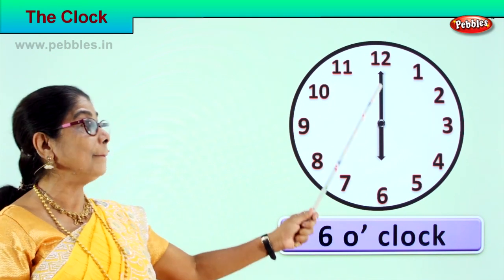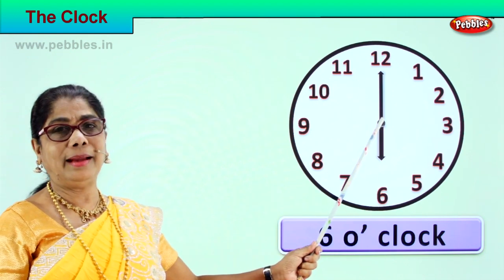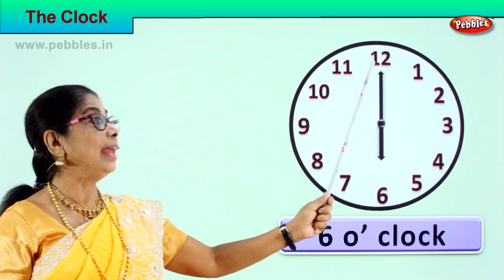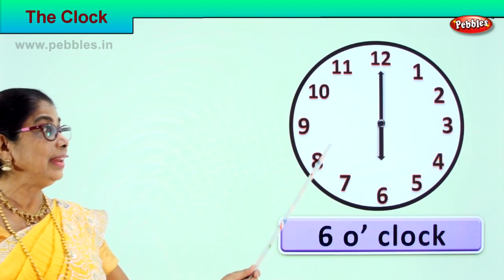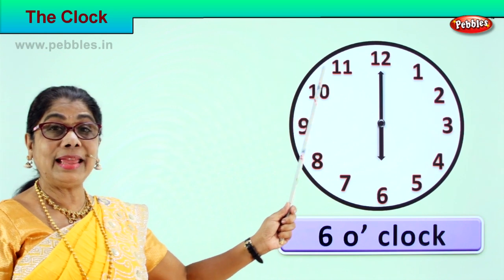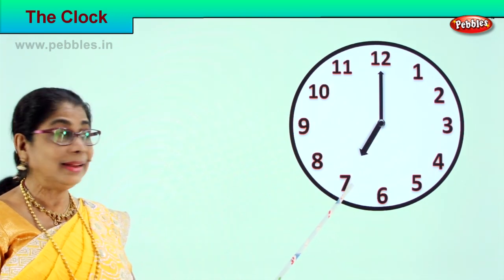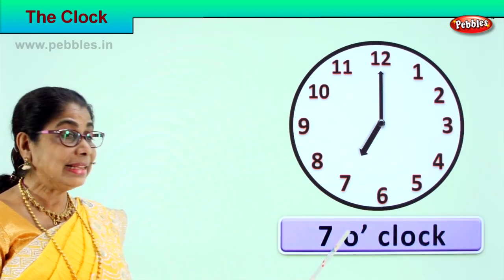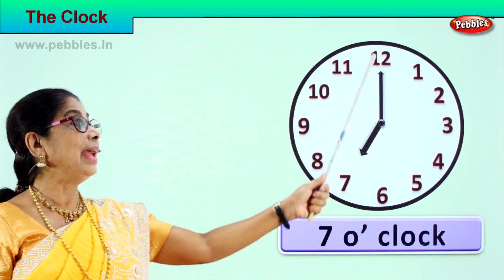We are learning to read the time. Now the minute hand goes from one to two to three, all the way to eleven, and comes back to twelve. The hour hand shifts from six to seven. Look at the position — the hour hand is on seven. What is the time now? The time is seven o'clock. The hour hand pointing towards seven, the minute hand stays at twelve.